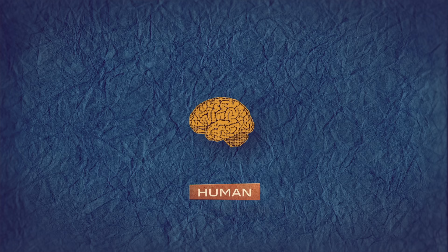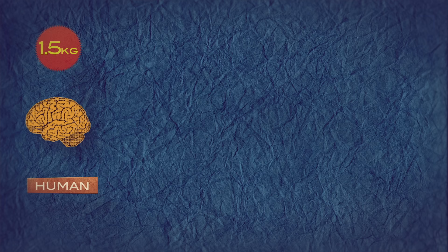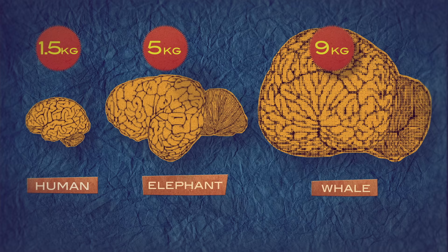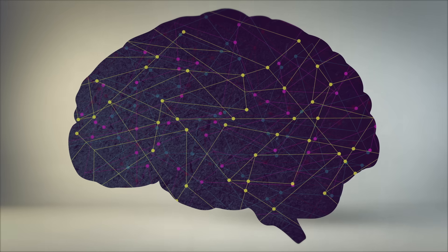This is far more than expected for their relative brain sizes, which scale in proportion to body size. Human brains weigh 1.5 kilograms, elephant brains 5 kilograms, and whale brains 9 kilograms. Yet on a per-weight basis, humans pack in more neurons than any other species. This dense packing is what makes us so smart.